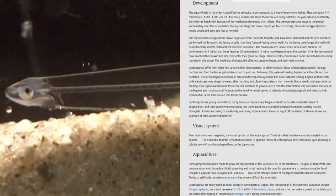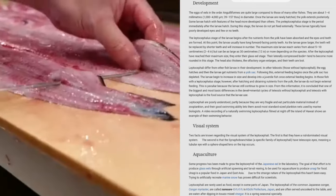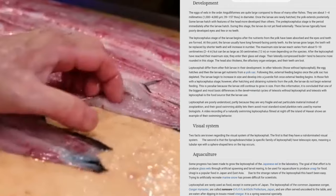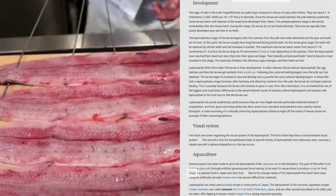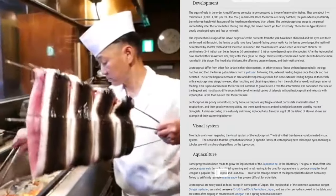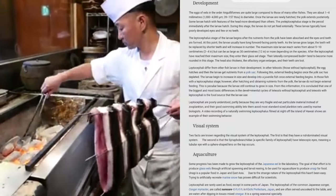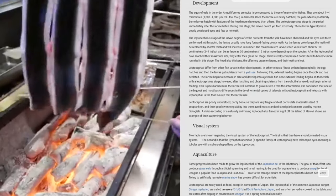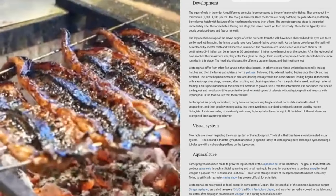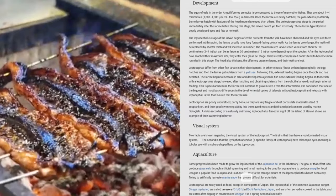Some progress has been made to grow the leptocephali of the Japanese eel in the laboratory. The goal of that effort is to produce glass eels through artificial spawning and larval rearing to be used for aquaculture to produce unagi for food. Unagi is a popular food in Japan and East Asia. Due to the strange nature of the leptocephali, this hasn't been easy. Trying to artificially recreate marine snow has proven difficult for scientists.